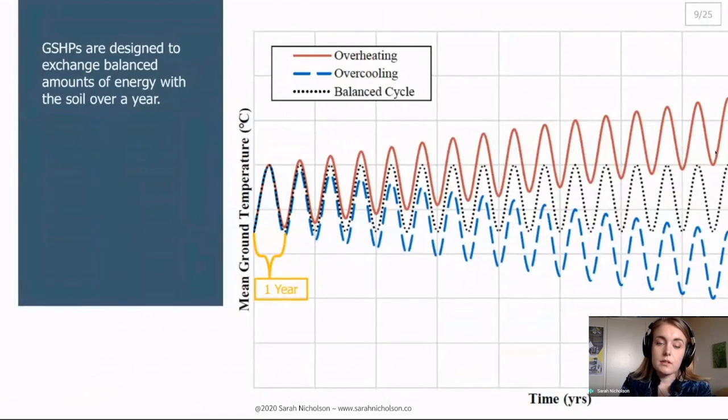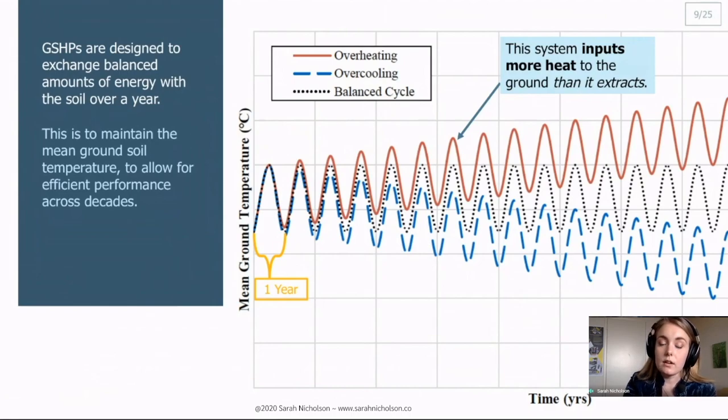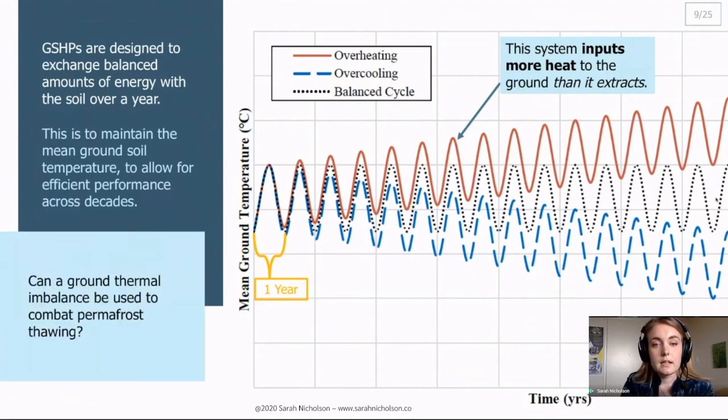We designed these systems so that the amount of heat that they extract in the summer, shown as this peak in temperature here, is approximately equal to the amount of heat that they put into the soil in the summer is approximately equal to the amount of heat they extract in the winter. When we have an unbalanced cooling load, so here this is cooling dominant building, it ends up overheating the soil over time which will decay the performance across decades. This is why we use a balanced cycle. But what I was wondering is can we use this ground thermal imbalance, which is what it is called when this mean ground temperature changes, to combat the permafrost thawing.